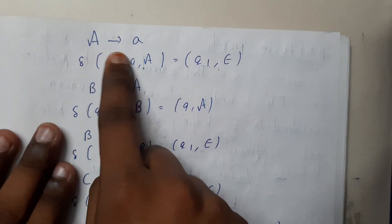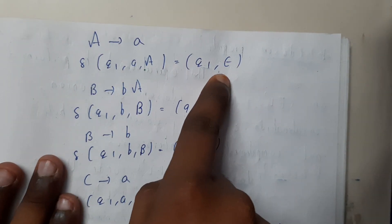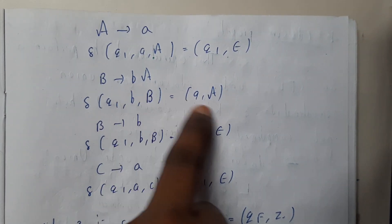Similarly, we will be writing in that way. A tends to a on input a will be emptying the stack. On input b will be pushing a. On input b will be emptying the stack. On input a will be emptying the stack.